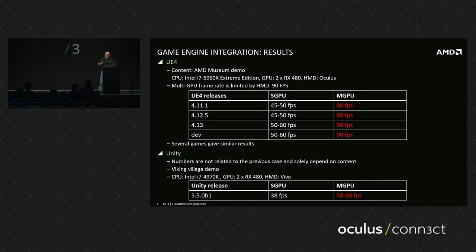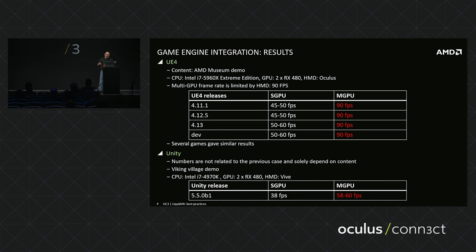In multi-GPU on Unreal, you always see 90 frames per second because it's limited by Oculus — Oculus paces the game engine to 90 fps and you cannot get more. That's the limitation, which is actually good. That's what we wanted to achieve: to reach Oculus-paced 90 frames per second.